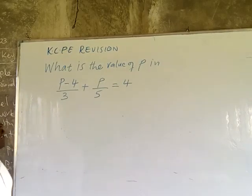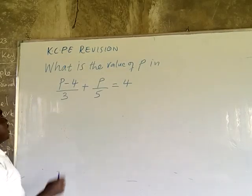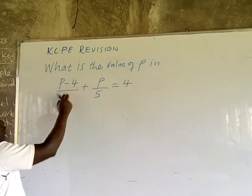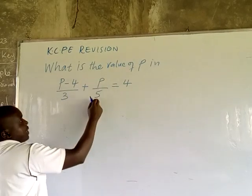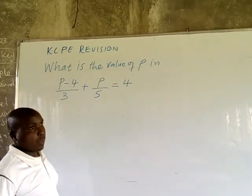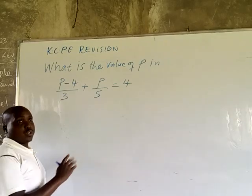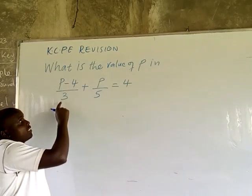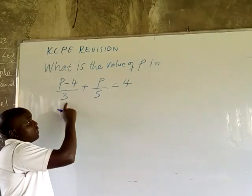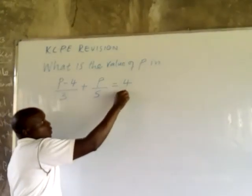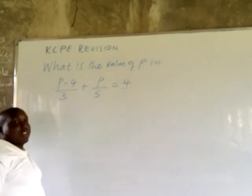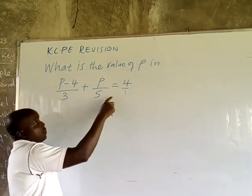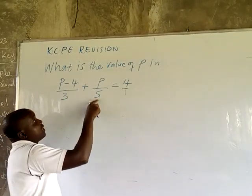What is the value of P in this equation? P minus 4 divided by 3 plus P over 5 equals 4. This is an equation, so we find the LCM. The LCM of 3, 5, and 1 — the LCM of all those numbers is 15.